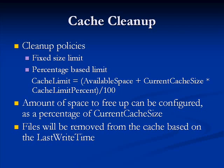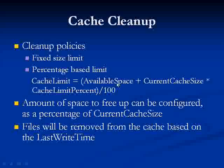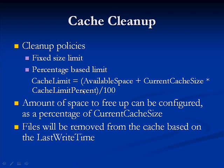The other policy we provide is what we call a percentage-based policy, wherein instead of setting a fixed limit, you can say I want to use 75% of my disk space as the limit for the cache storage. In this case it's actually a moving target. We calculate the cache limit based on the expression shown here, wherein we take the available space and then take the percentage of that, which gives the actual cache limit.